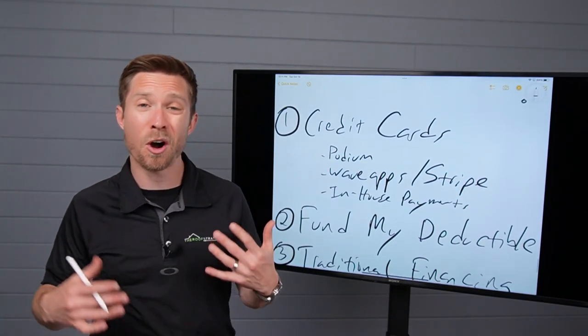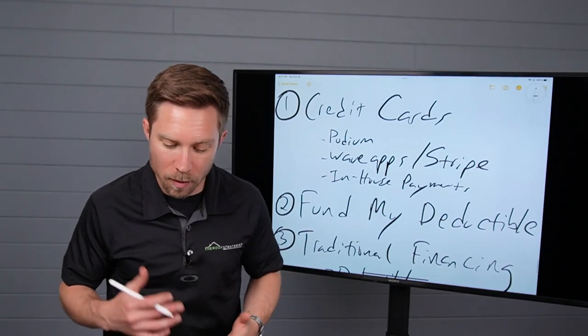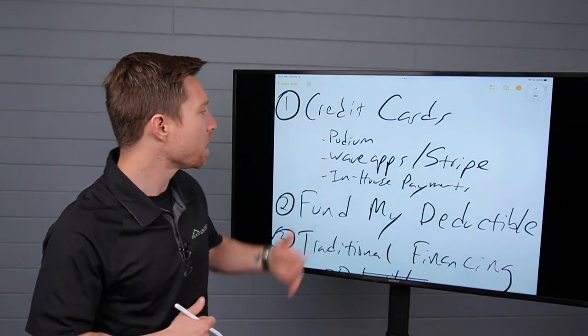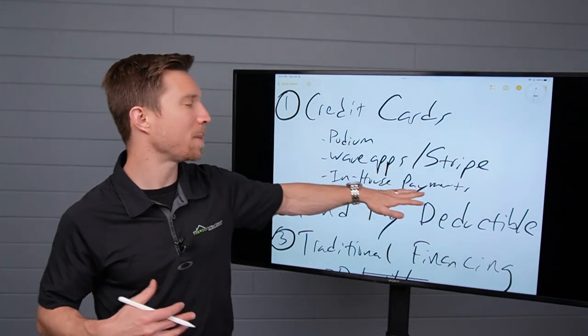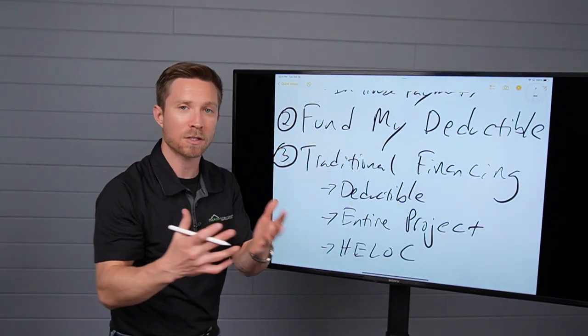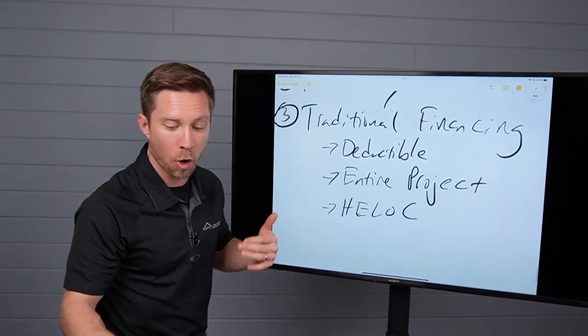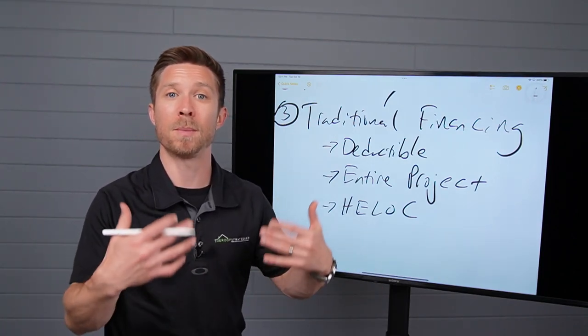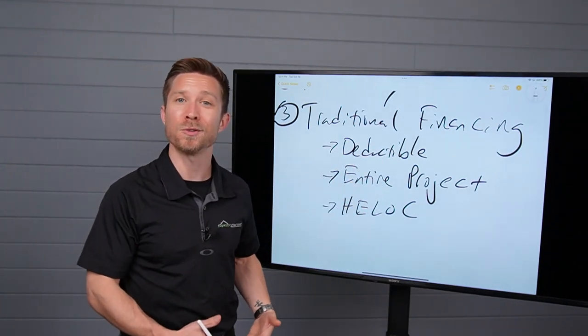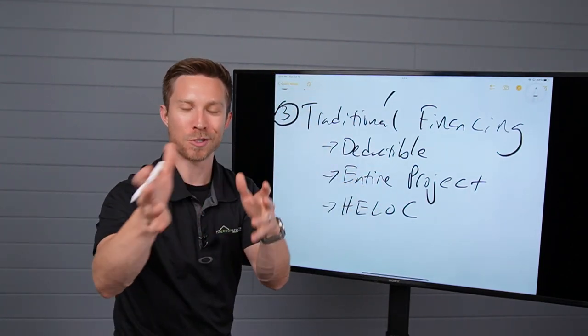So there you have it. Three easy ways to begin offering financing for deductibles to help you win more business. Number one is accepting credit cards. Look for any options for card readers. I like Podium because you can text those over and the company can run that. We have Wave apps and Stripe integrations setting up in-house payment plans. And then number two is looking at a program dedicated to this, which is Fund My Deductible, to offer that in-house. Or traditional financing options through your normal home improvement loans. And again, they can finance the deductible, potentially even the entire project and pocket some of the proceeds from the insurance. Again, so long as we do this all above board legally and are invoicing for what's actually done and the homeowner's contributing their deductible.